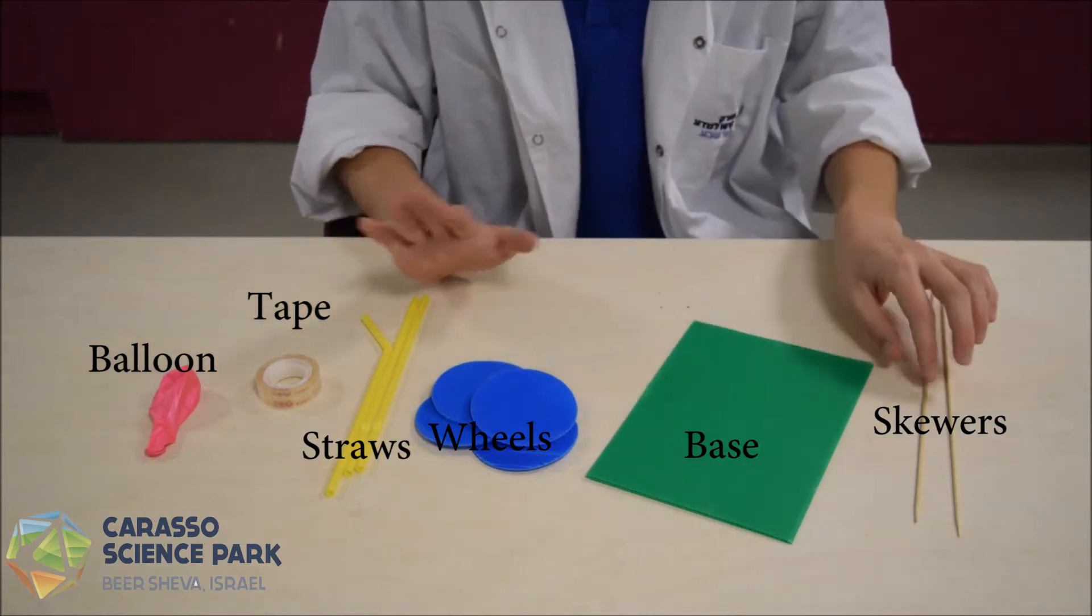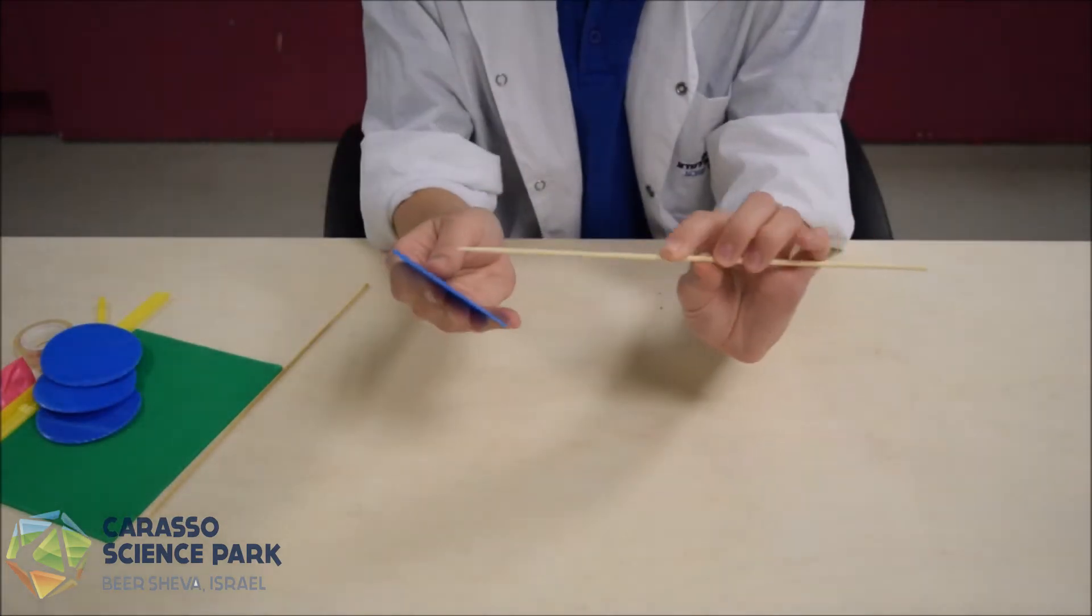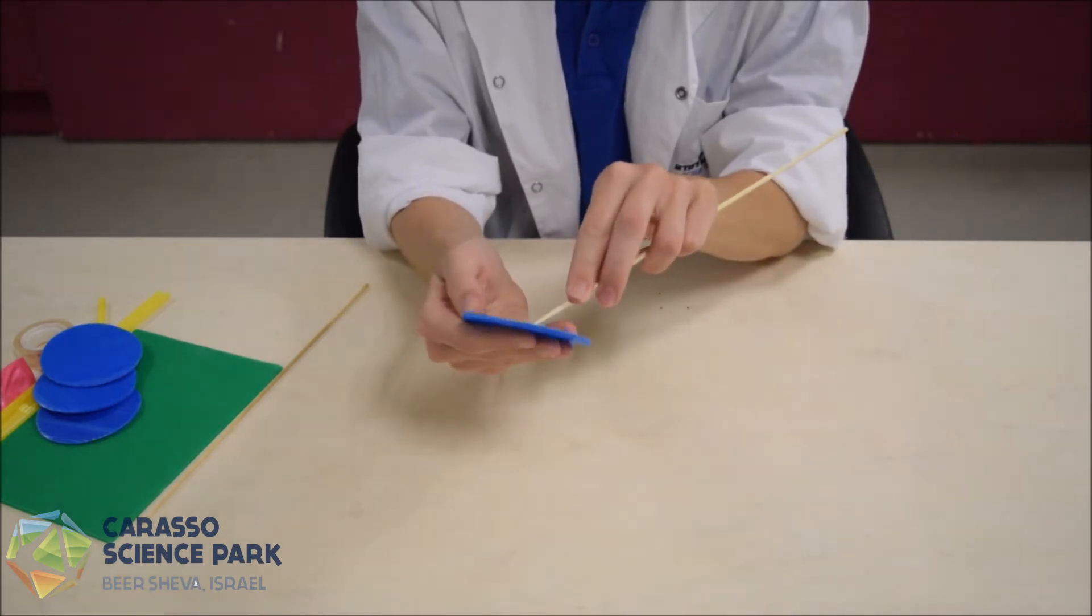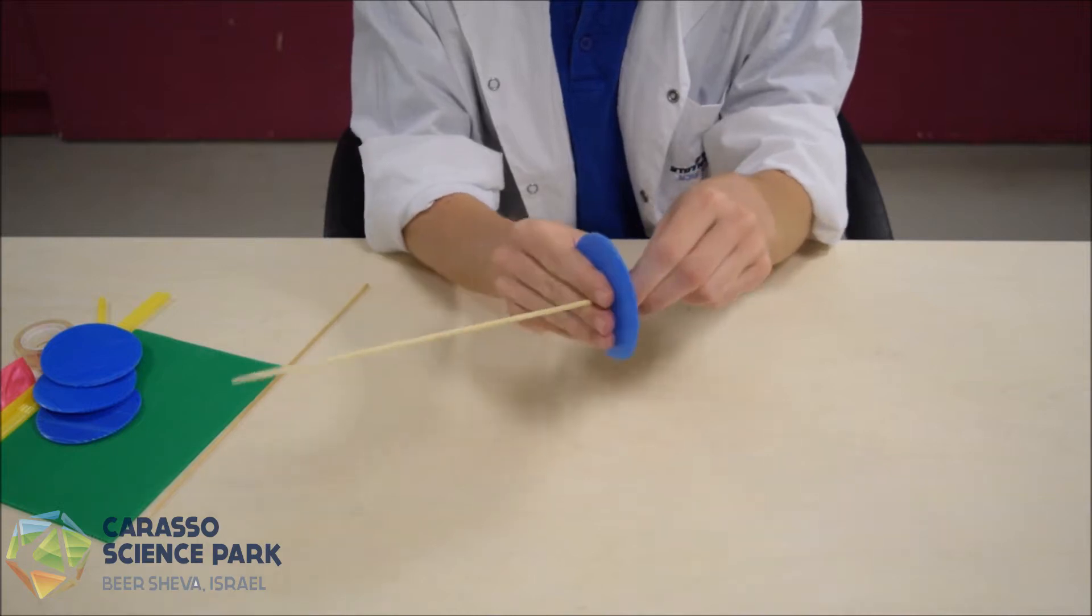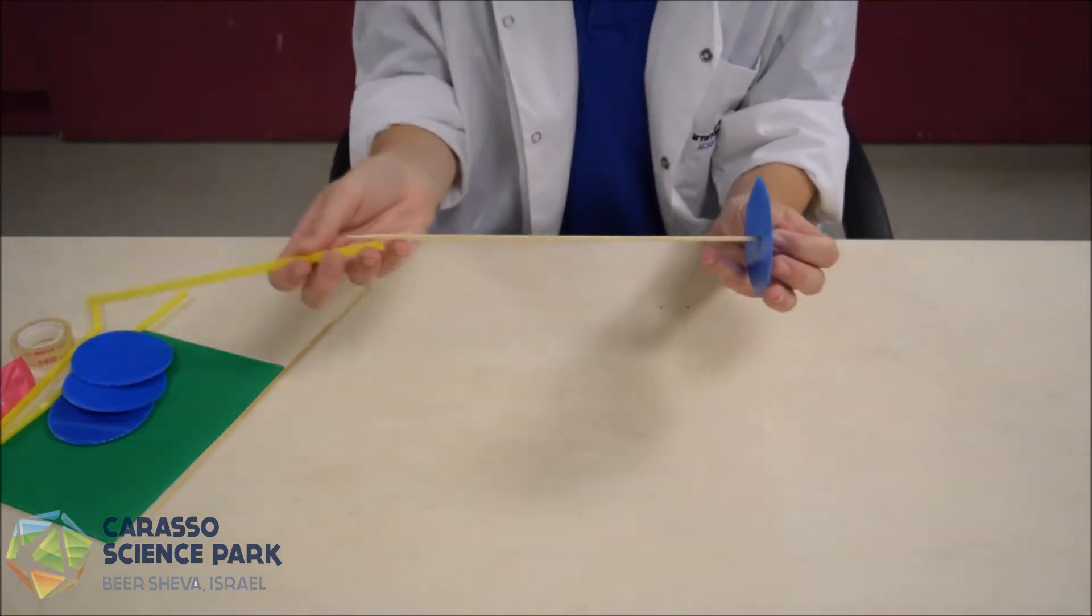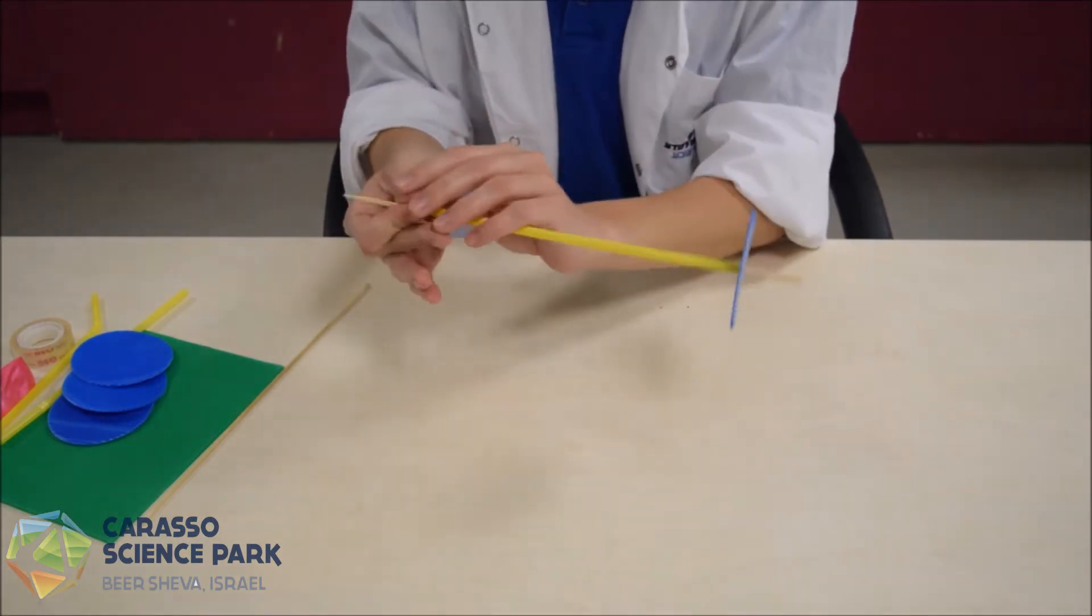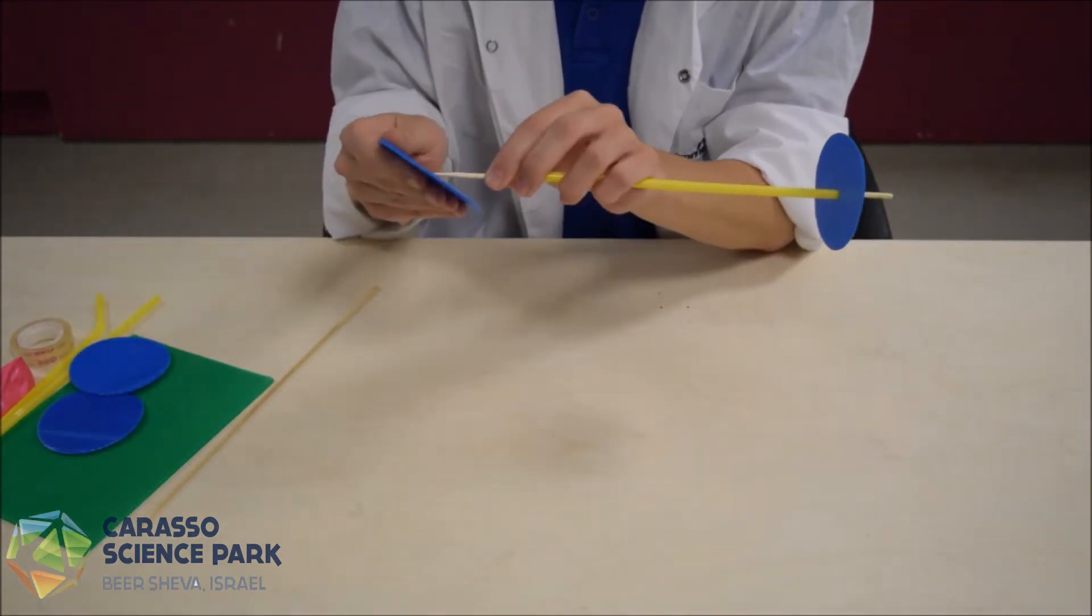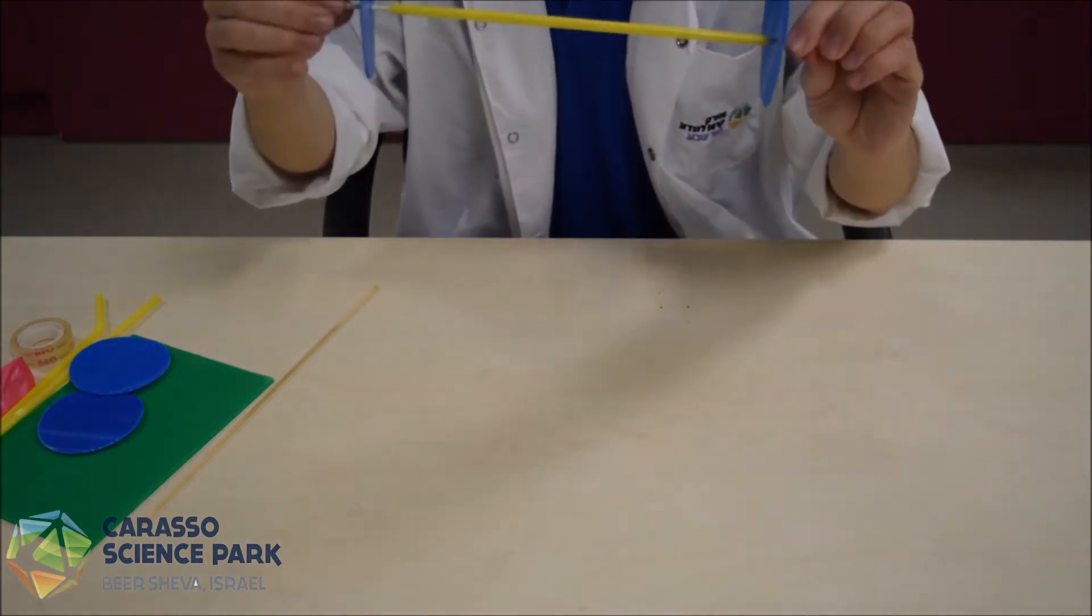Let's start by making the wheels. We'll start at the pointy end and place it right in the middle. Next we'll put on a straw and the second wheel. We'll make two of the same.